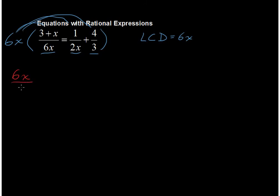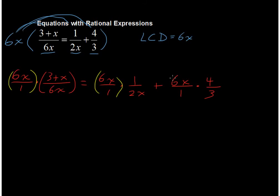I'm going to say 6x over 1. You can make anything into a fraction by just putting it over 1, multiplied by 3 plus x over 6x equals 6x over 1 times 1 over 2x plus 6x over 1 multiplied by 4 over 3. So everything, every single term, gets multiplied by this 6x.